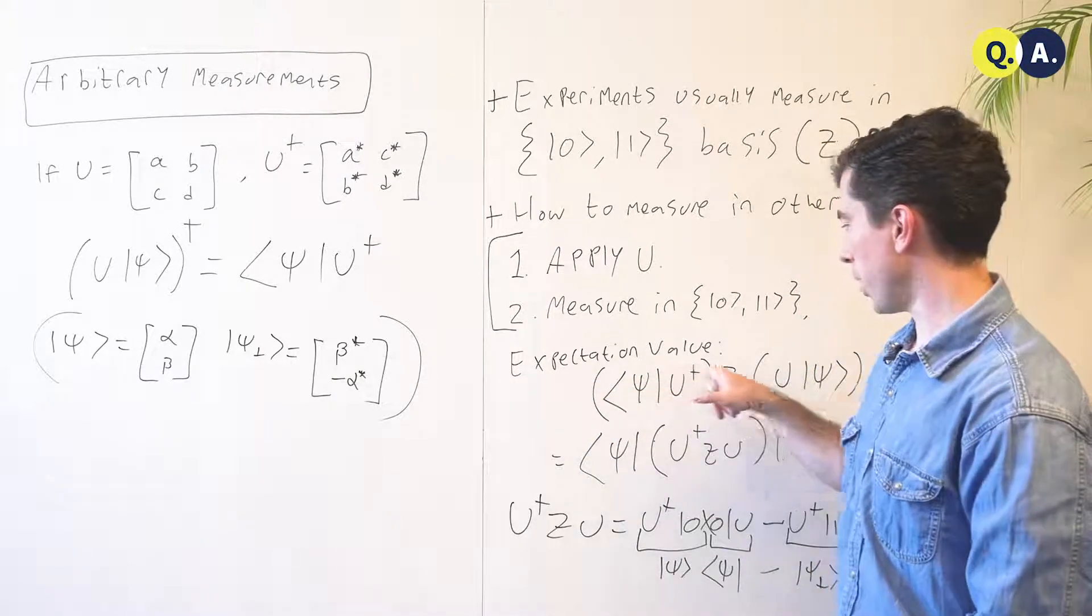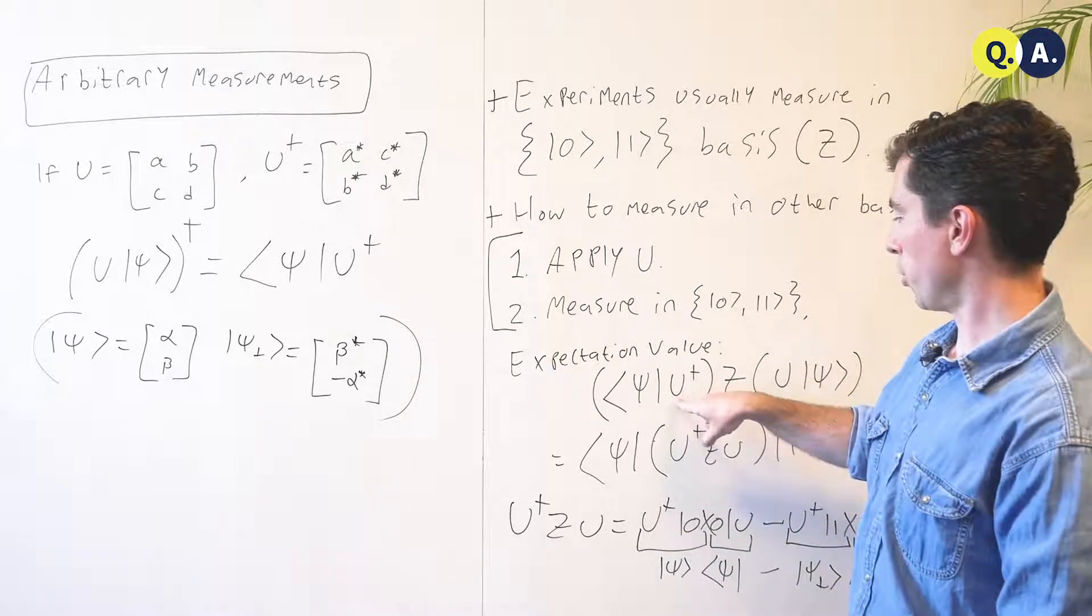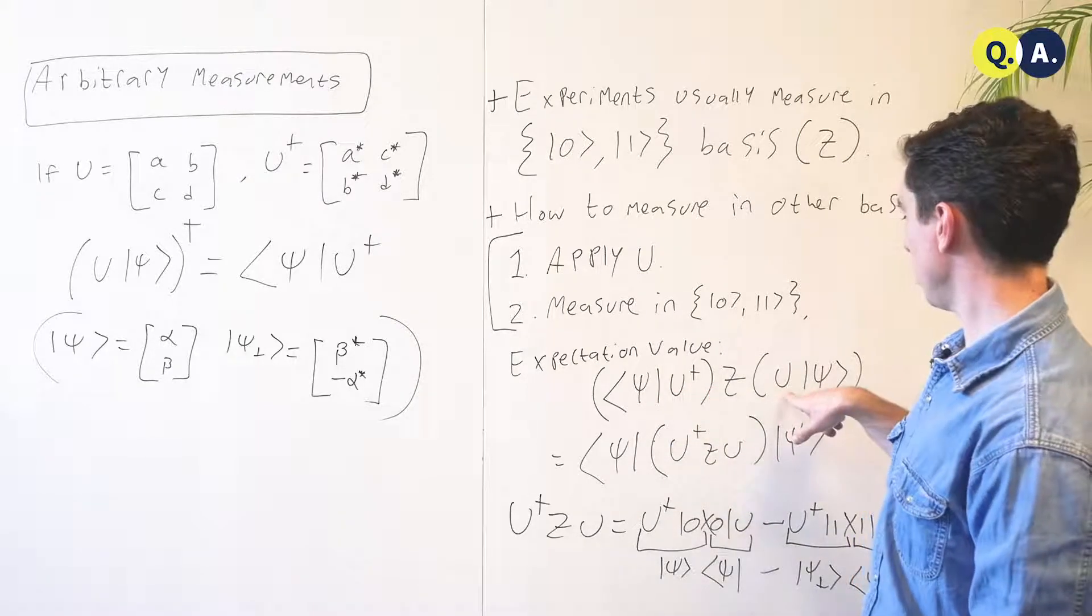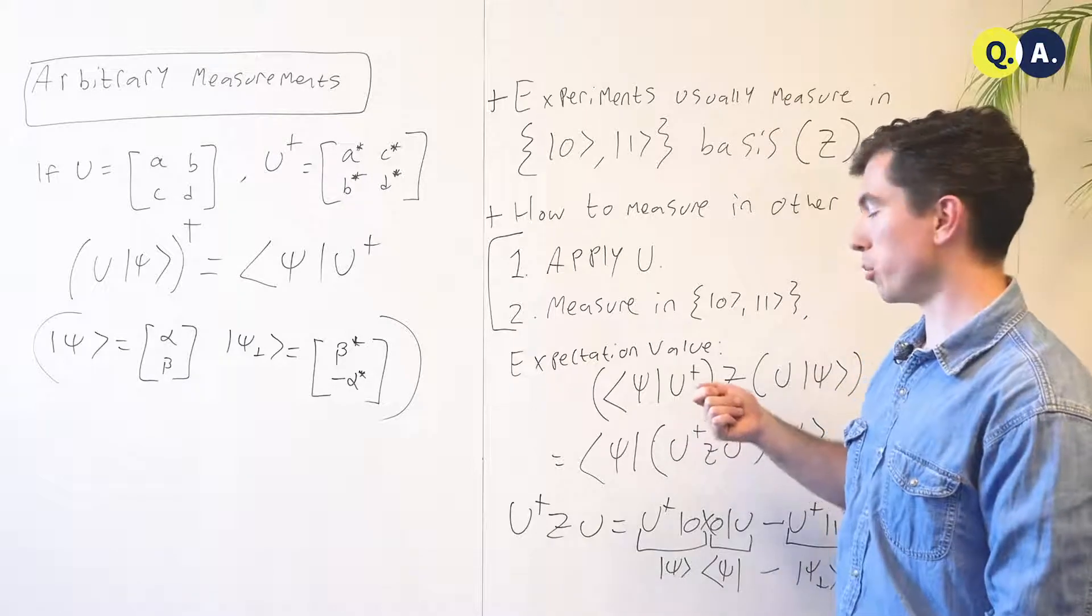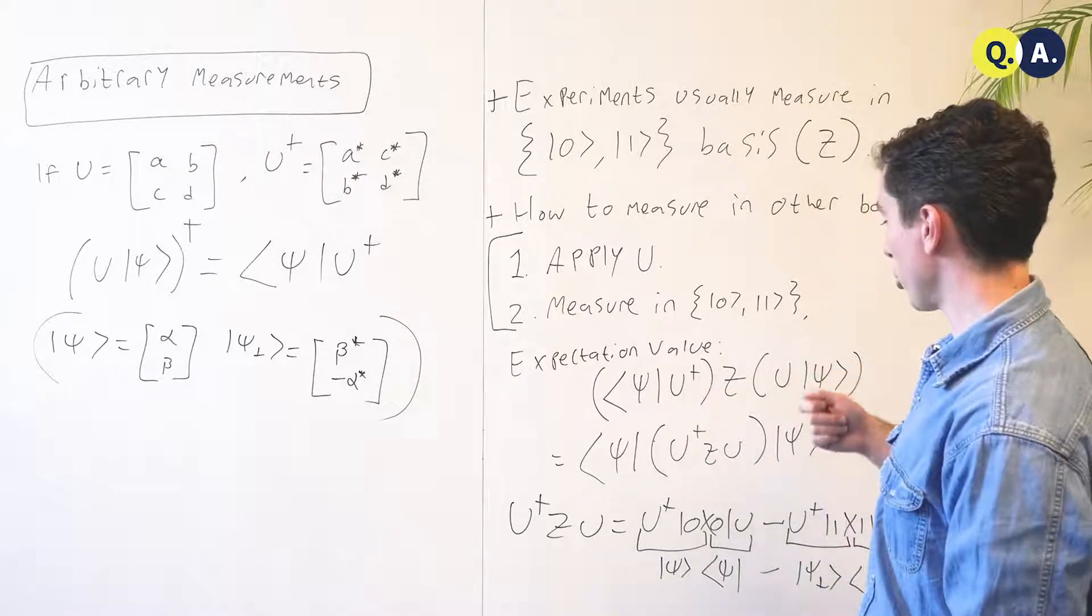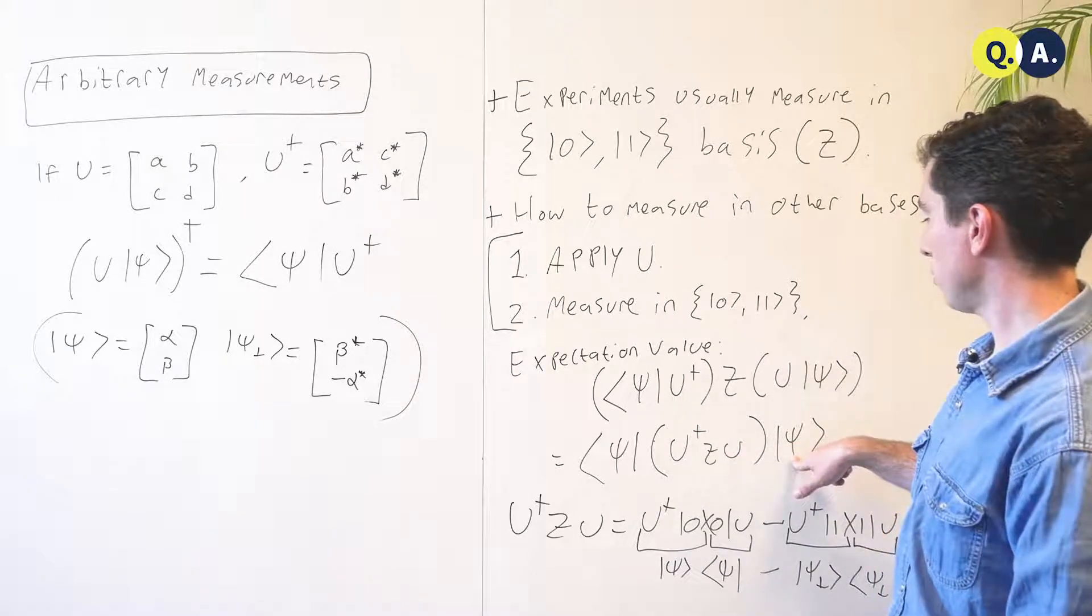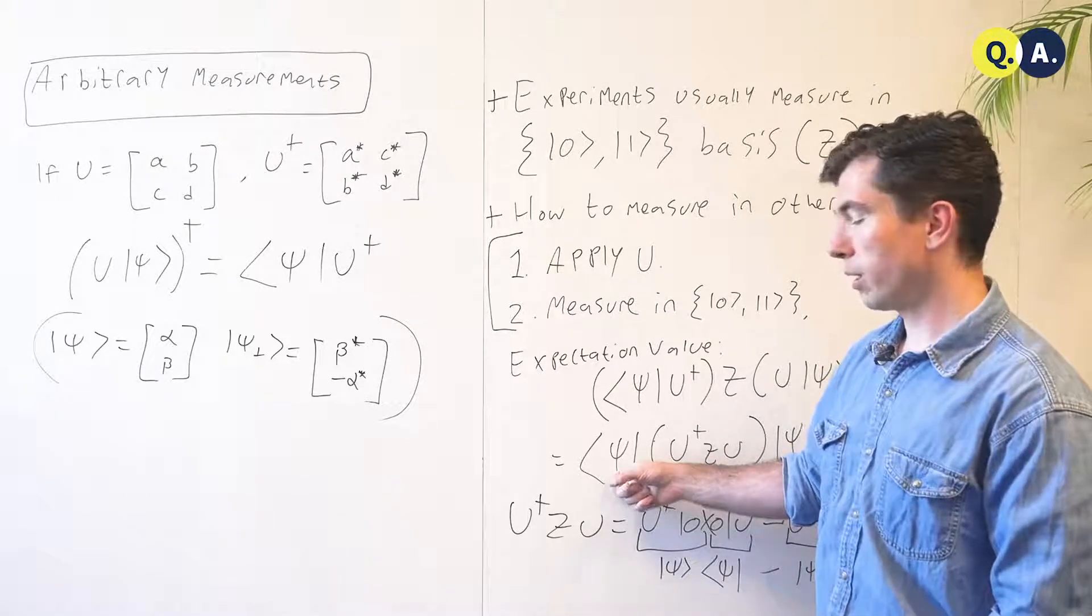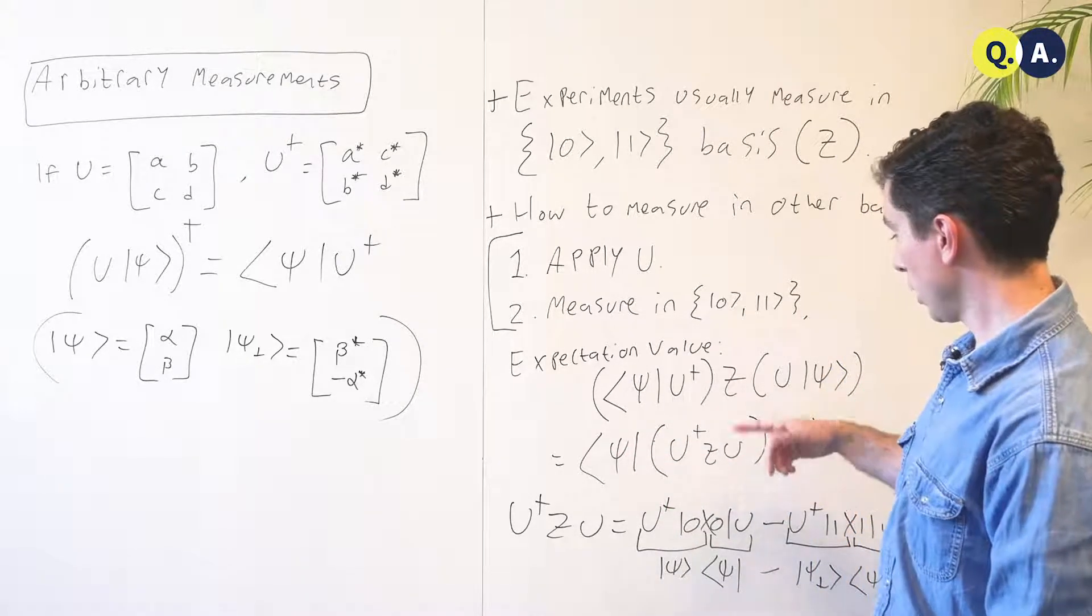So the expectation value of this measurement, if we first apply u to psi, that replaces psi with psi u dagger in the bra and u psi in the ket, and then we take the familiar sandwich product to determine the expectation value of the operator, we end up with psi u dagger z u psi. So it's as if we had our original state psi, and instead of measuring z, we measured u dagger z u.